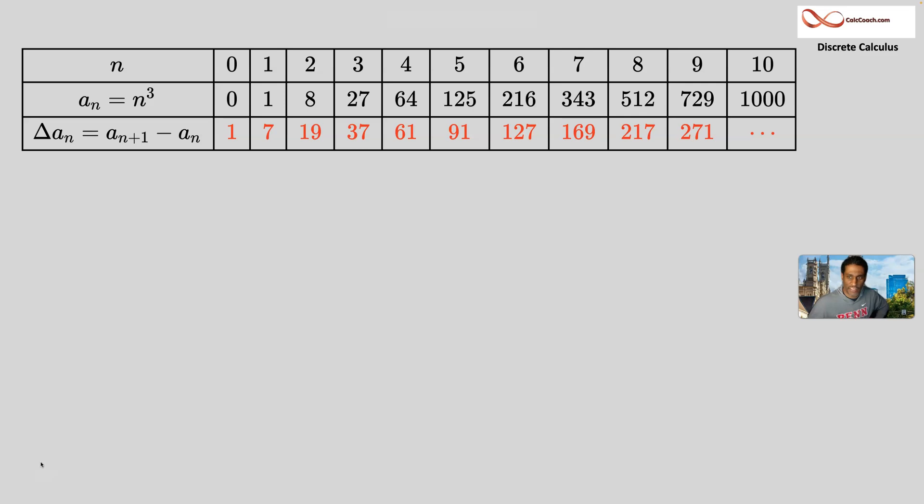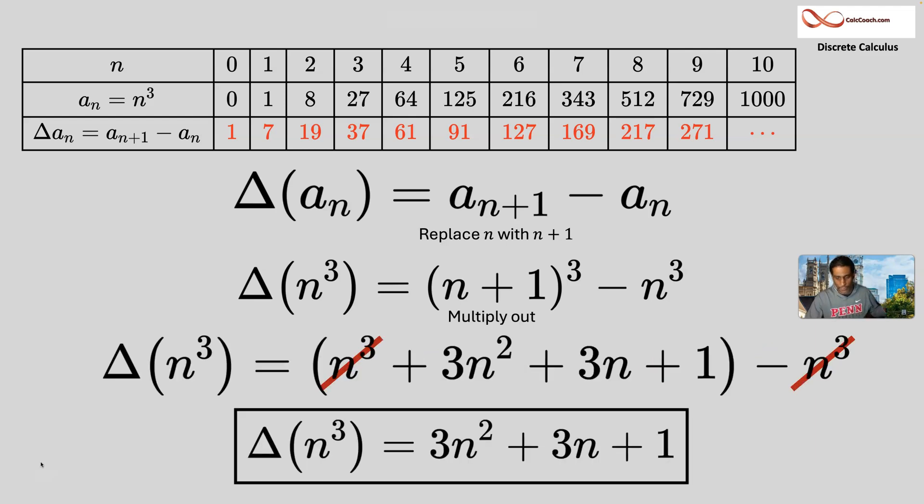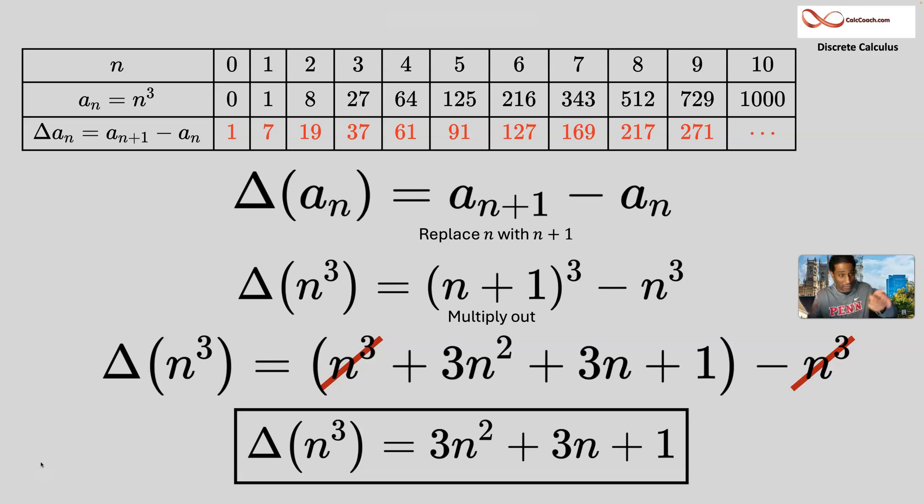How about n cubed? The pattern isn't so recognizable. They still look like odd numbers, but not every odd number consecutively. So what are we going to do? We're going to go to the formula, replace all the n's with n plus 1's. We'll have n plus 1 quantity cubed minus n cubed. And when you cube that out, you'll be able to cancel out the n cubes. So you'll end up with just the 3n squared plus 3n plus 1.